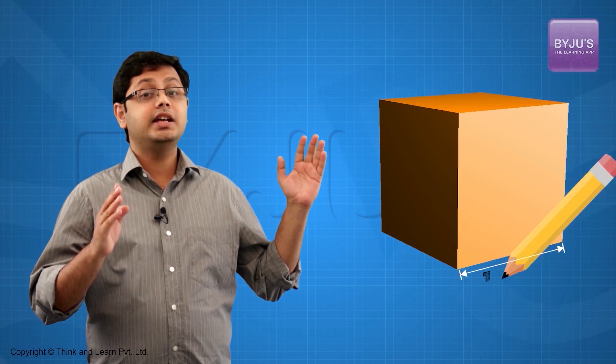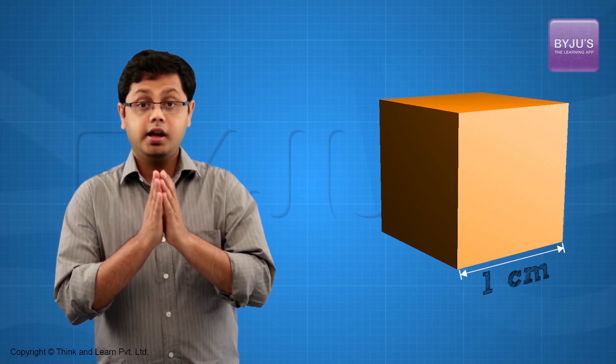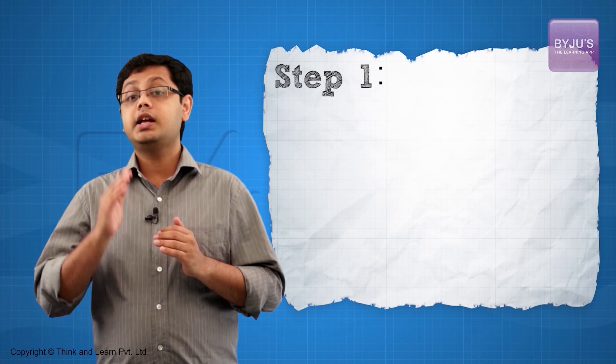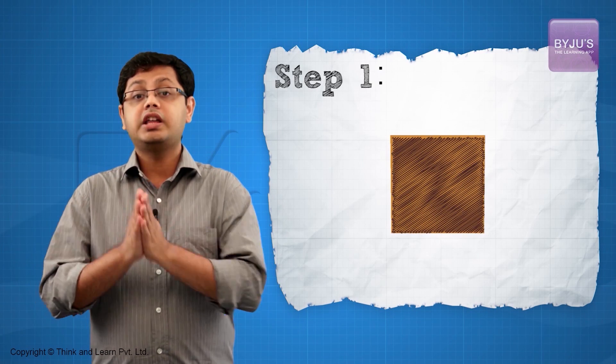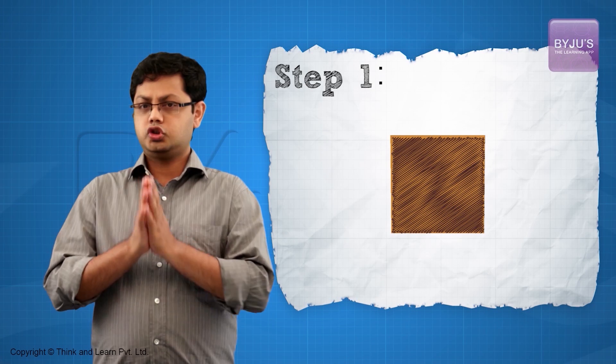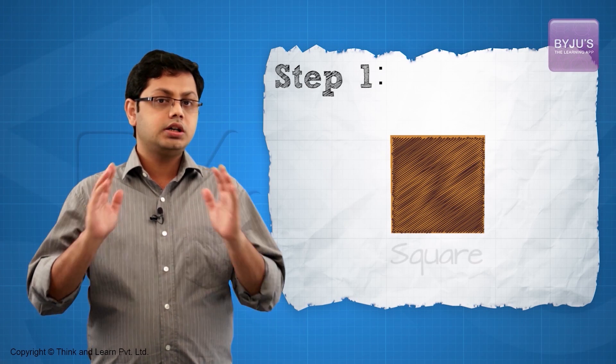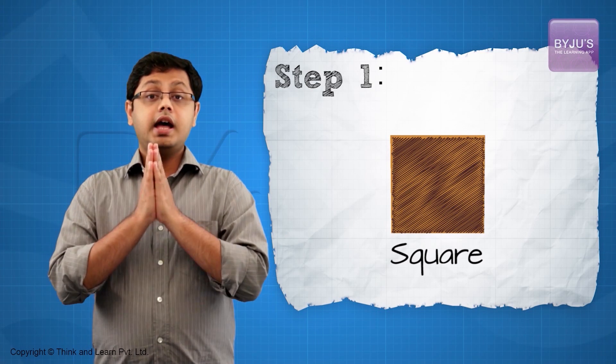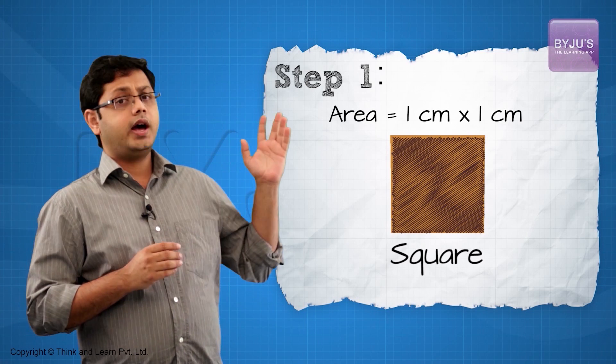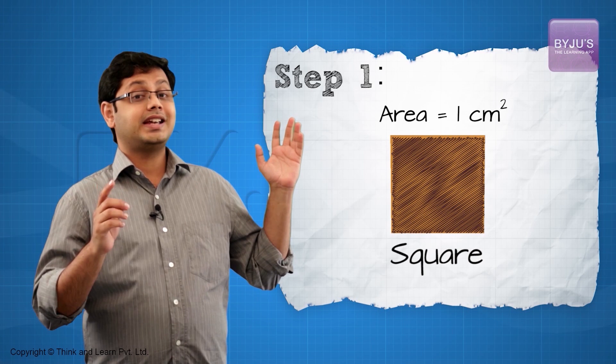Now let us try and implement these steps. Let us find the volume of this cube which has got a side length of 1 cm. In step 1, we have to calculate the area of the 2D figure that formed this cube. So the 2D figure that forms a cube is a square, right? The area of this square is going to be 1 cm squared.